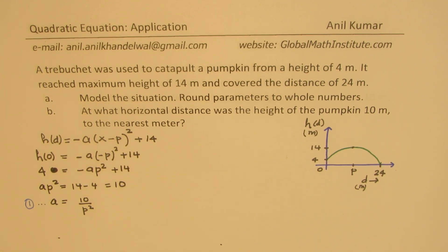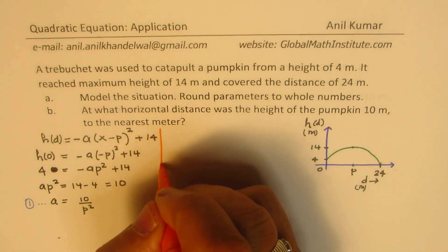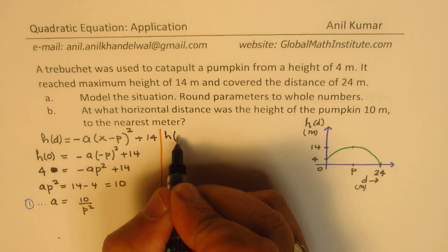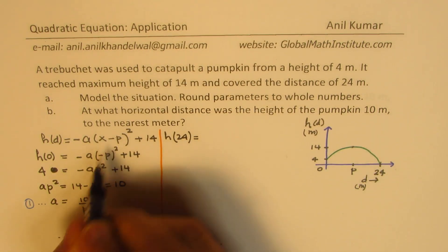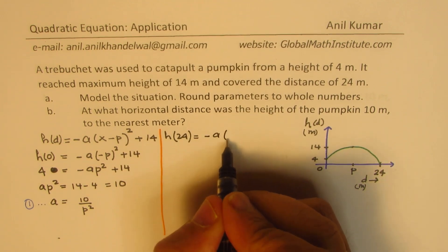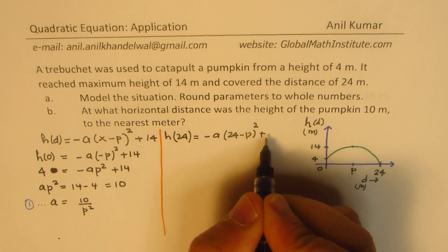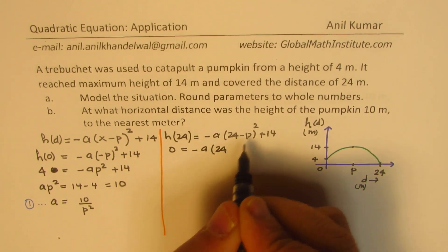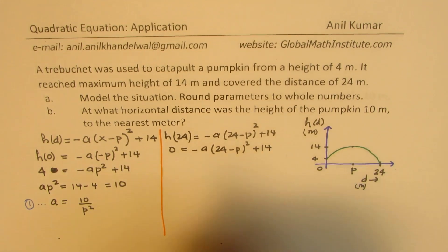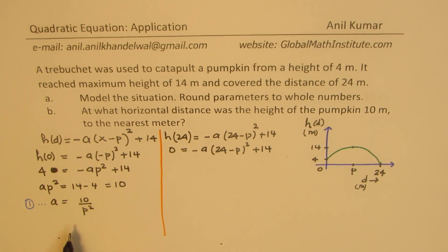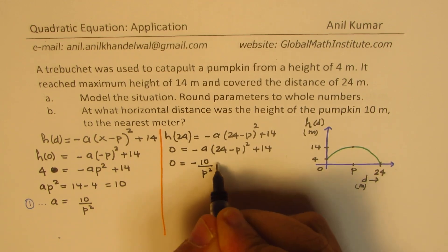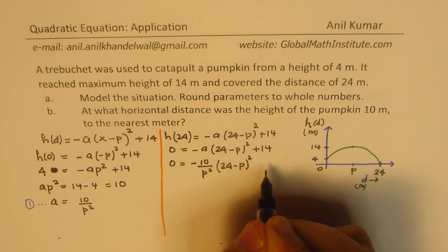Now we have the other point, which is (24, 0). Using this point, when the distance is 24, the height is 0. So we substitute x equals 24: 0 equals minus A times (24 minus P) squared plus 14. We substitute A equals 10 over P squared. So we get 0 equals minus 10 over P squared times (24 minus P) squared plus 14. Multiplying by P squared, we get 0 equals minus 10 times (24 minus P) squared plus 14P squared.